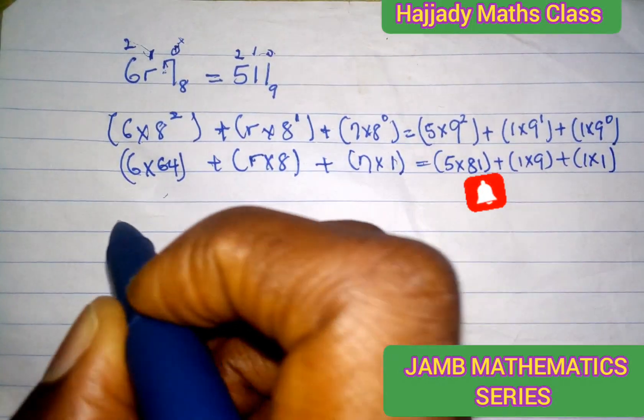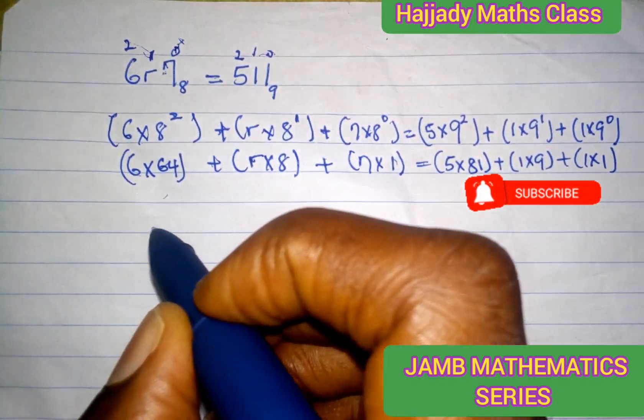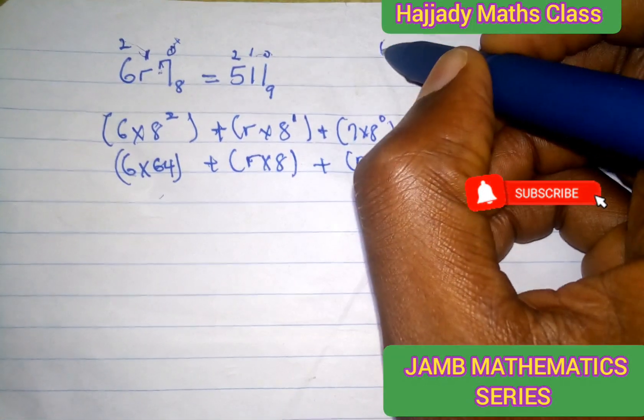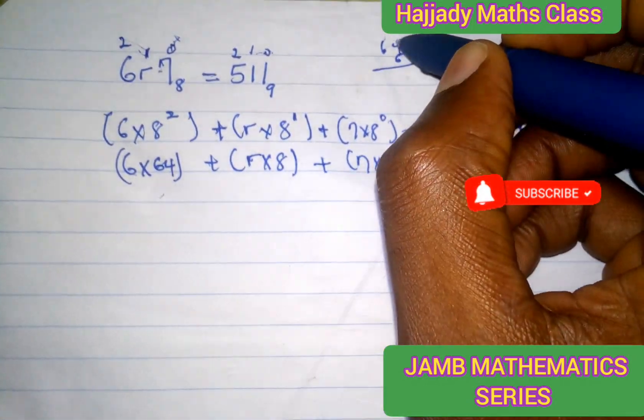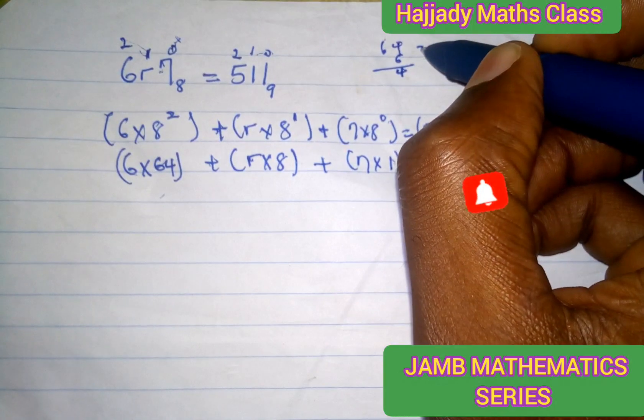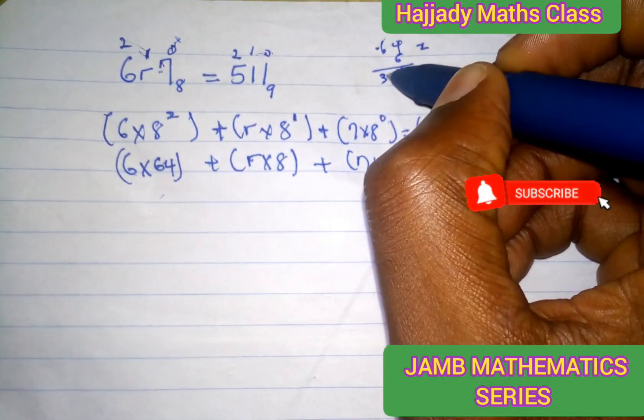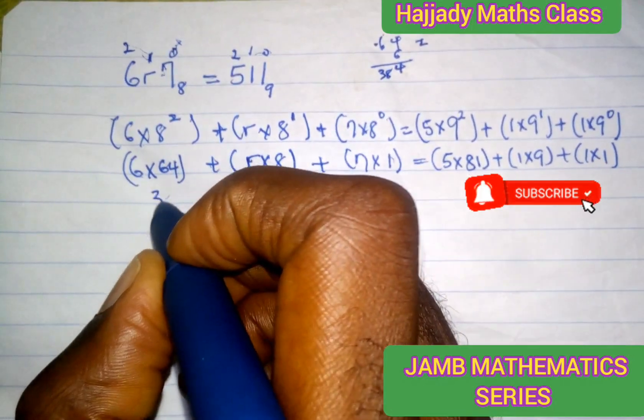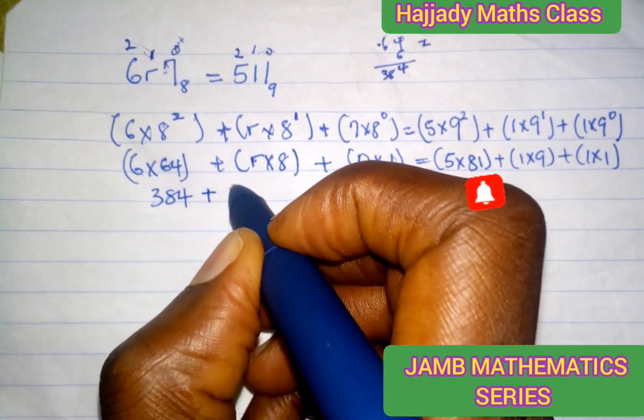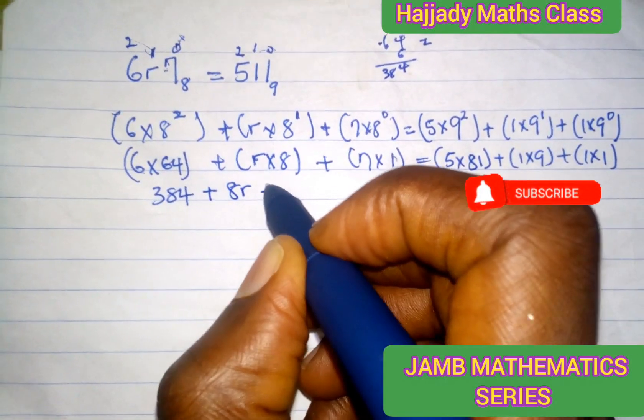Here we have 6 times 64. You can do that multiplication: 64 times 6, 6 times 4 is 24, keep 2. 6 times 6 is 36 plus 2, you have 384. So this gives 384 plus 8R plus 7.